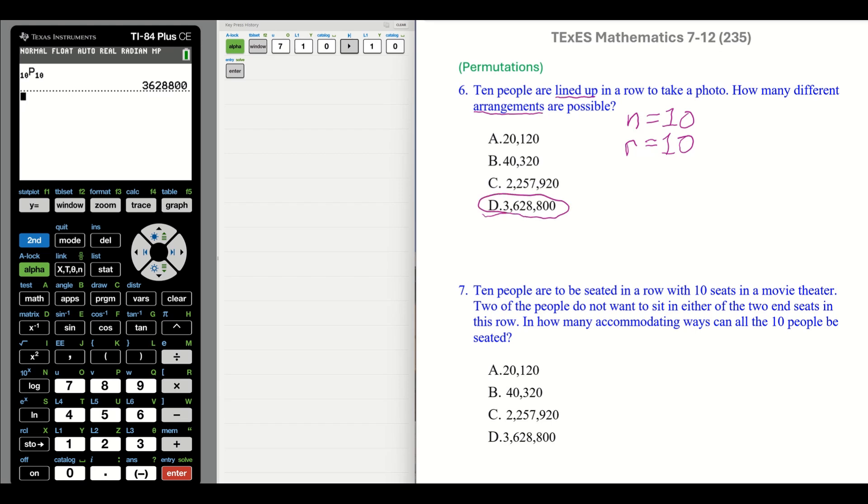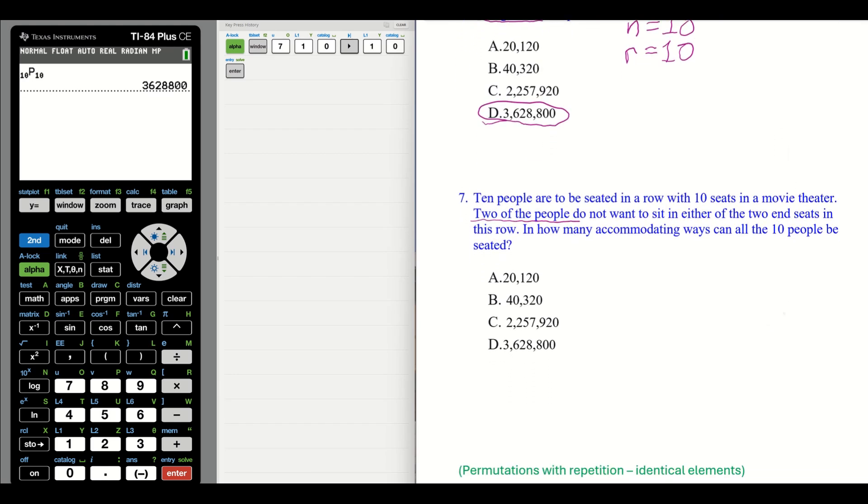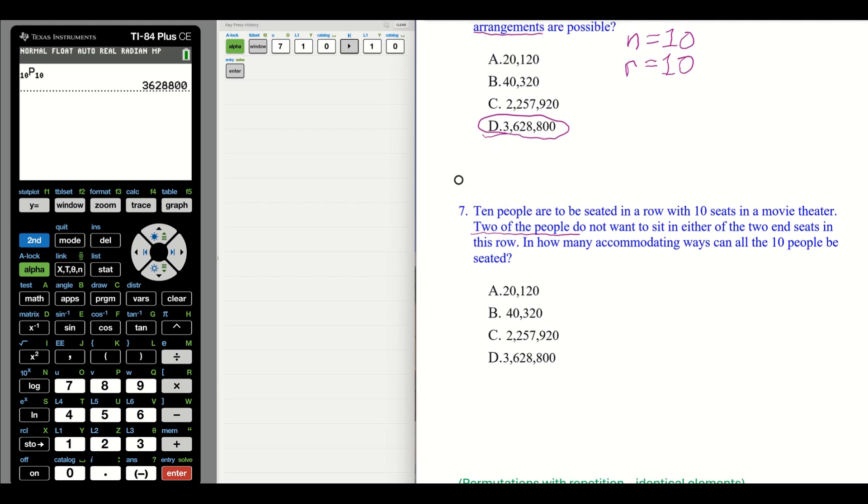Number seven: 10 people are to be seated in a row with 10 seats in a movie theater. Two of the people do not want to be seated on either end in this row. How many accommodating ways can all the 10 people be seated?